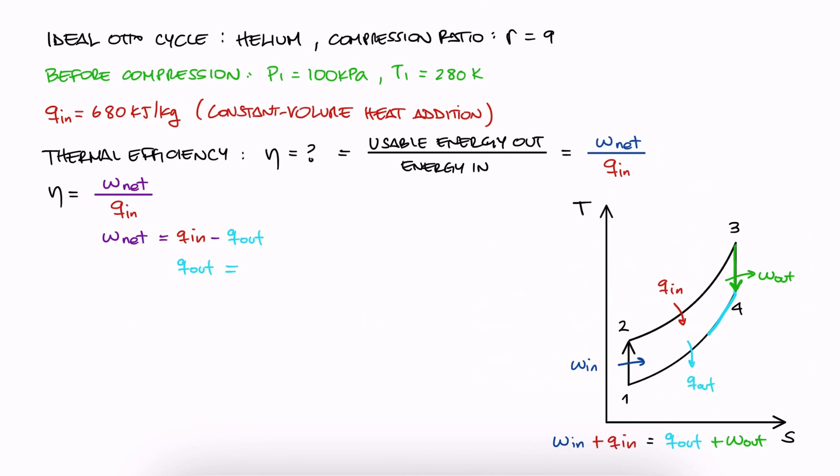Since the heat coming out is that after the expansion, we would have U4 minus U1. And since in this case we have helium, which has constant specific heats, we can write it in terms of Cv and temperatures. From this expression, we're missing T4.